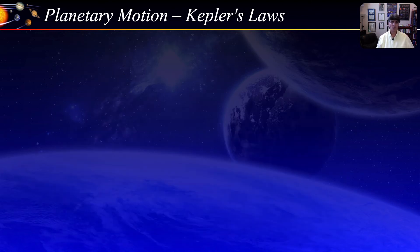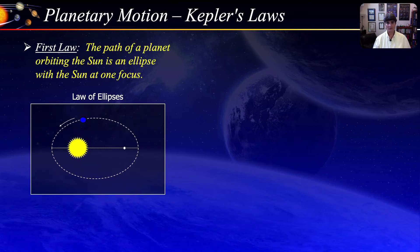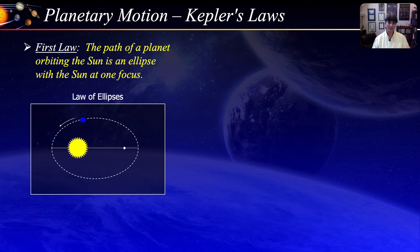Let's now explore the orbital motion of planets. In the early 1600s, German mathematician Johannes Kepler derived three empirical laws of planetary motion, thereby refining the Copernican system. The first law, also known as the Law of Ellipses, states that the path of a planet orbiting the Sun is an ellipse, with the Sun in one focus of the ellipse. Please note that the elliptical path in the figure is greatly exaggerated for illustration purposes only — the actual elliptical paths are nearly circular.